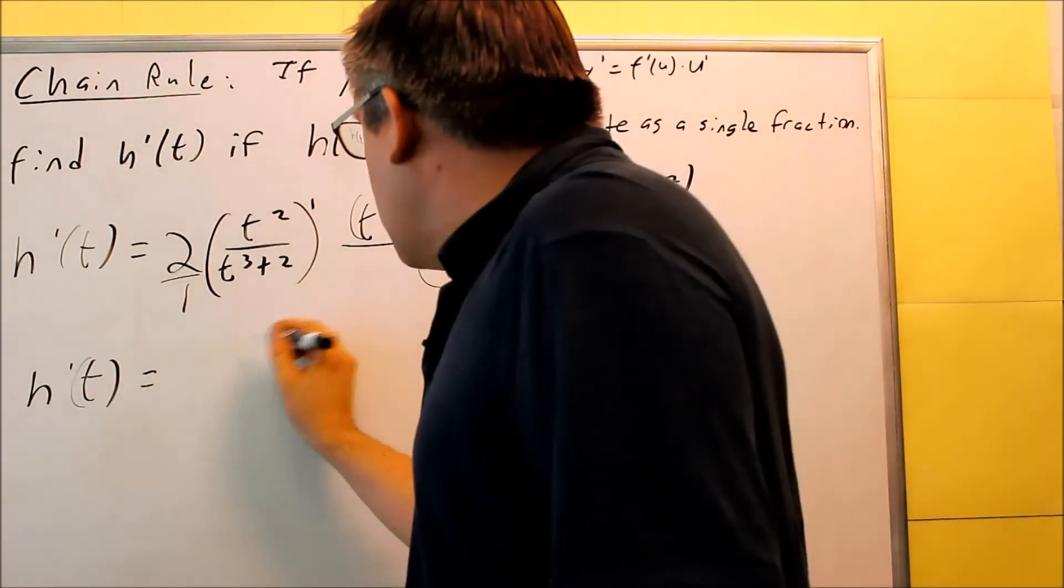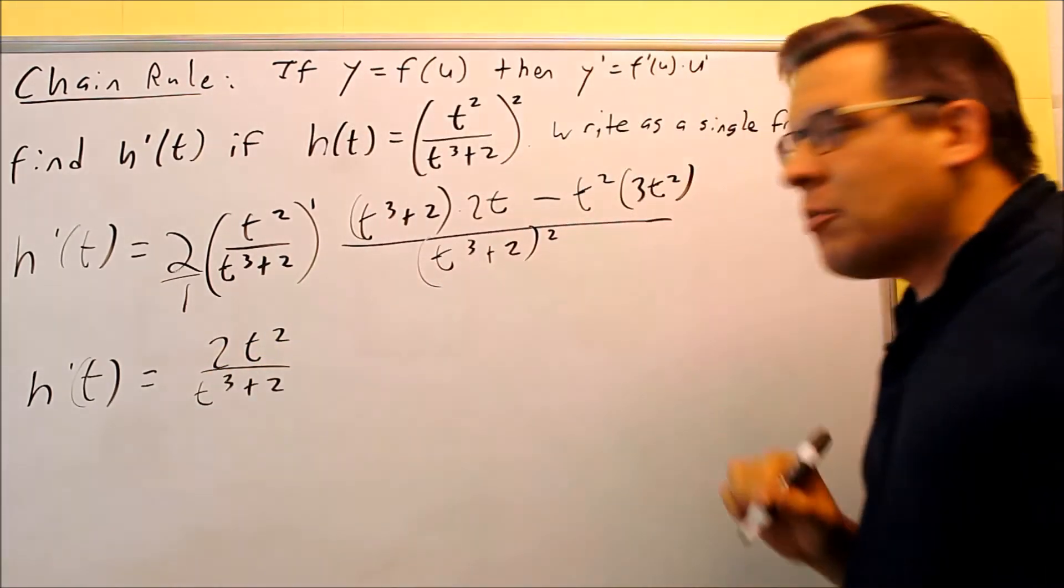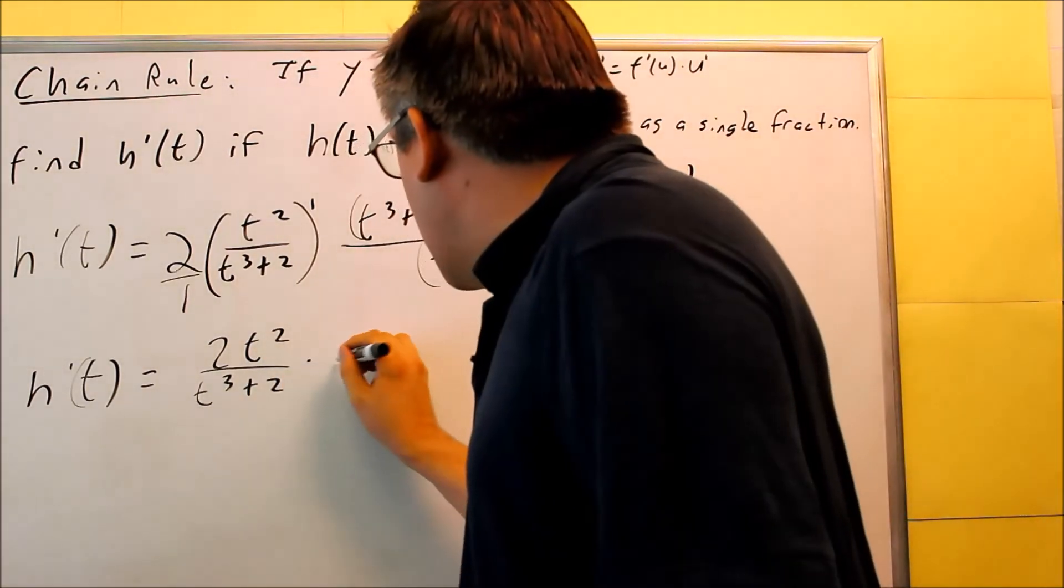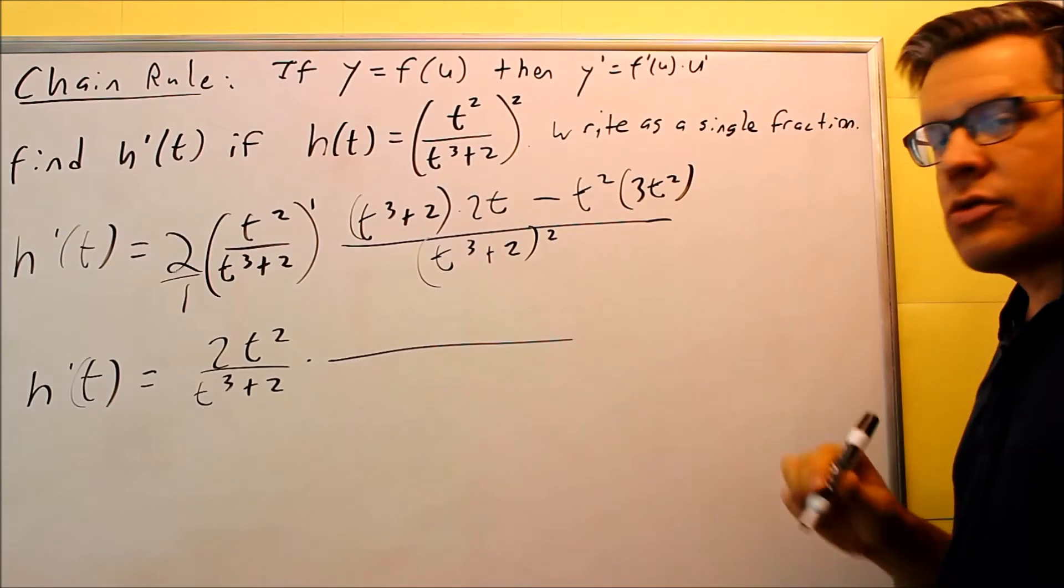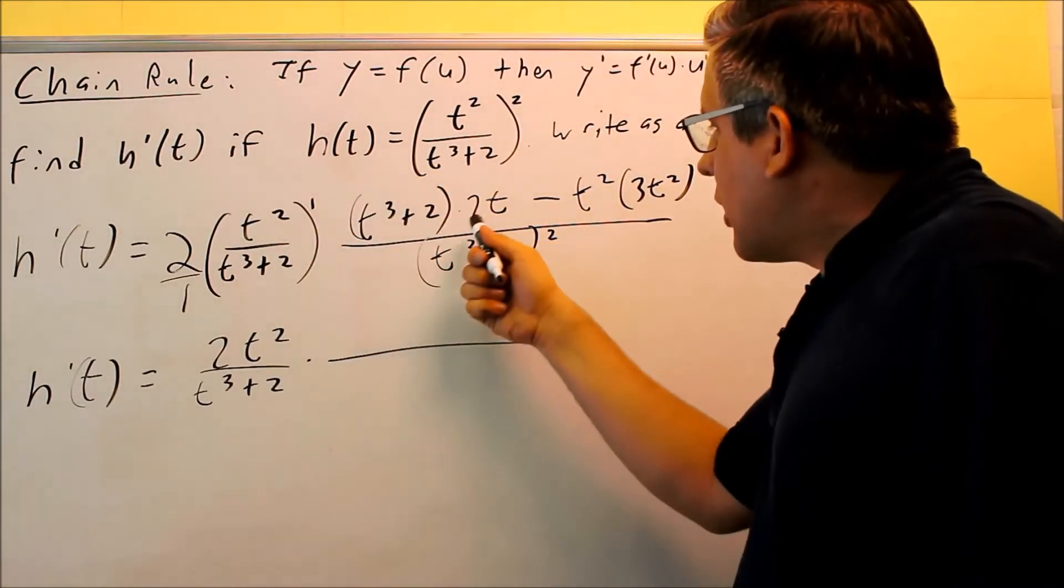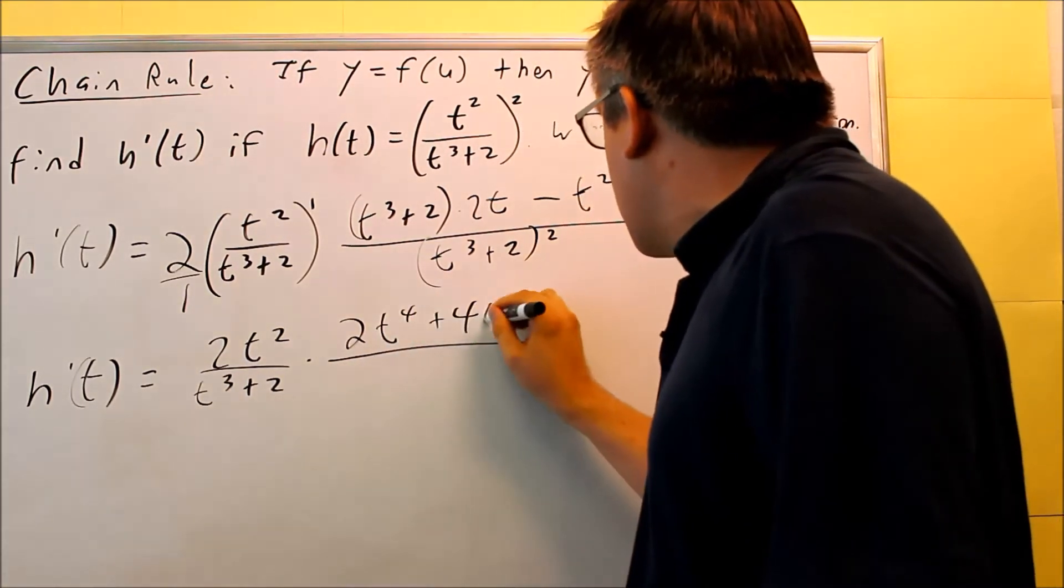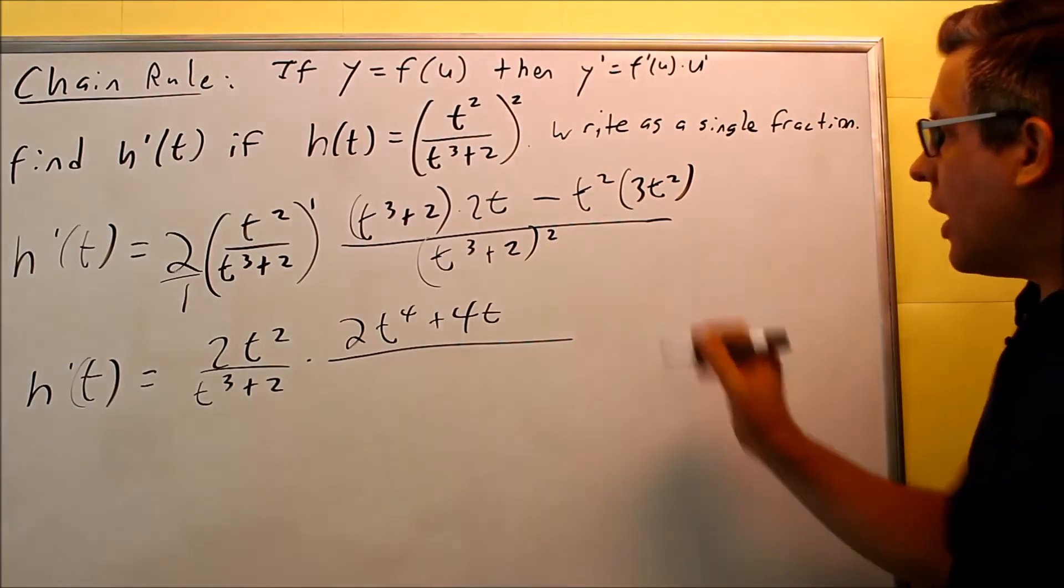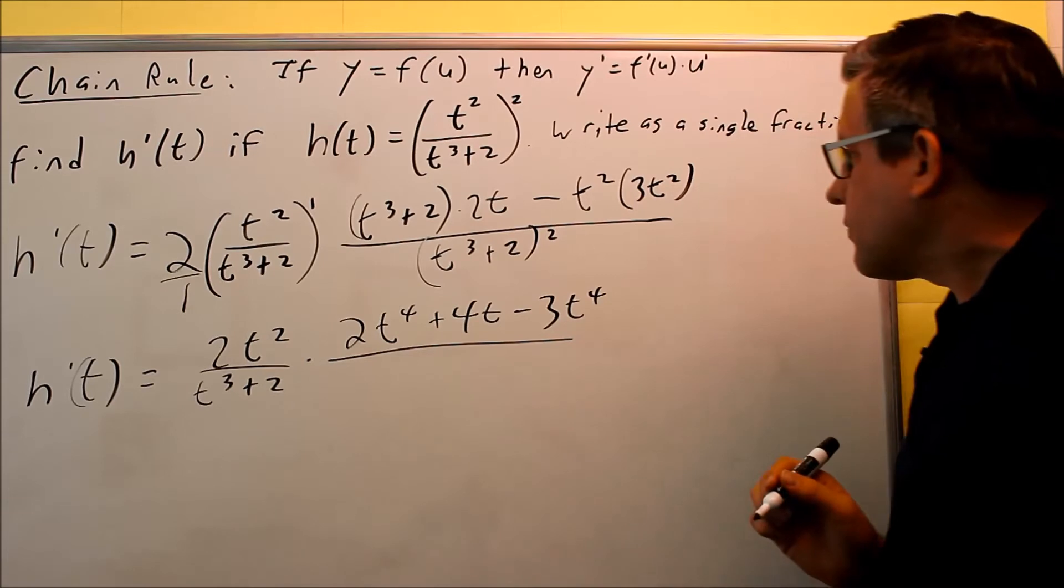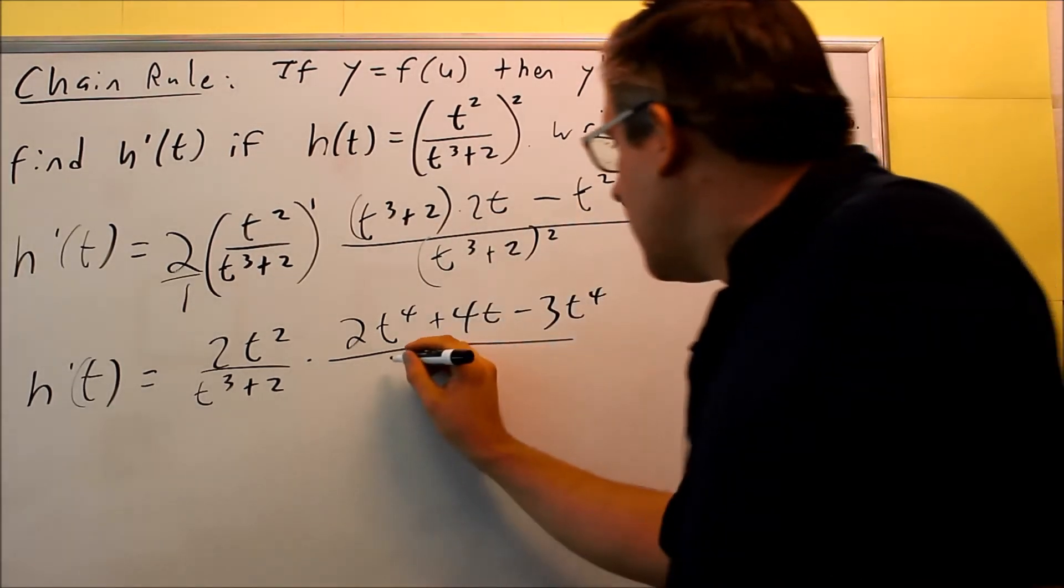Let's leave the first part alone, we'll leave that as 2t squared over t cubed plus 2. Not much more we can do with that first part, so we'll leave that alone. And then, I'm going to multiply it by this. So this part, I want to do some cleanup work with it. I'm going to multiply this part out, do some foiling, so 2t to the 4th power plus 4t, and then I have this part minus 3t to the 4th power.